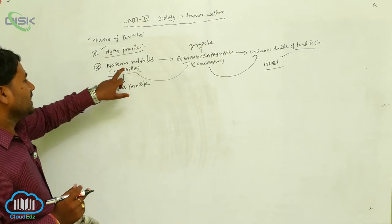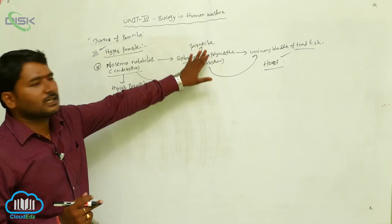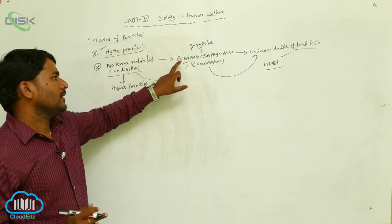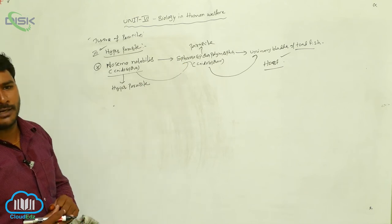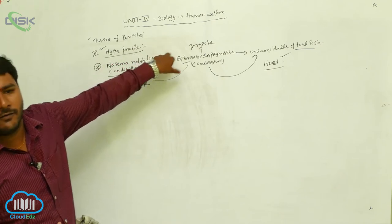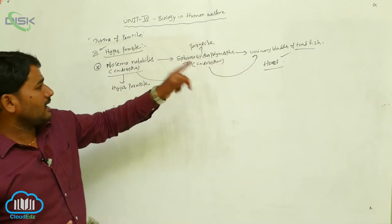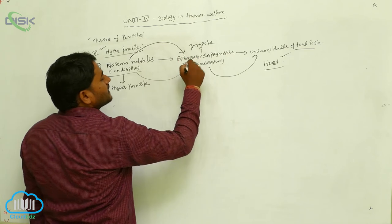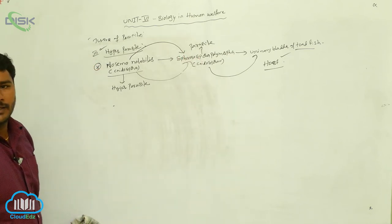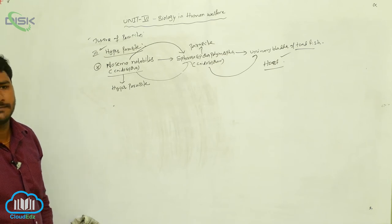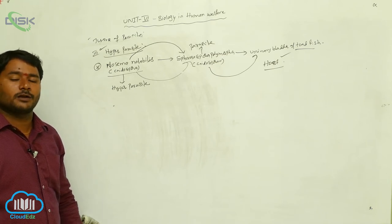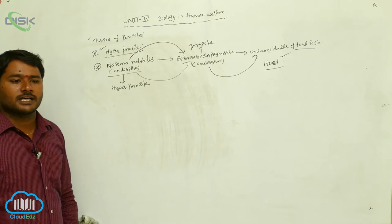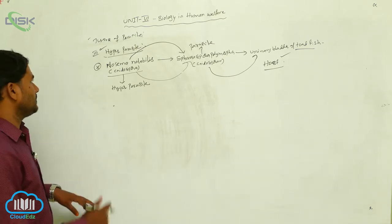The meaning of hyper parasite: it spends its parasitic life on another parasite. Nosema notabilis spends its life in a parasitic mode within Spirospora polymorpha, which is itself a parasite in the urinary bladder of toadfish. A parasite that parasitizes another parasite is called a hyper parasite, and this phenomenon is called hyper parasitism.